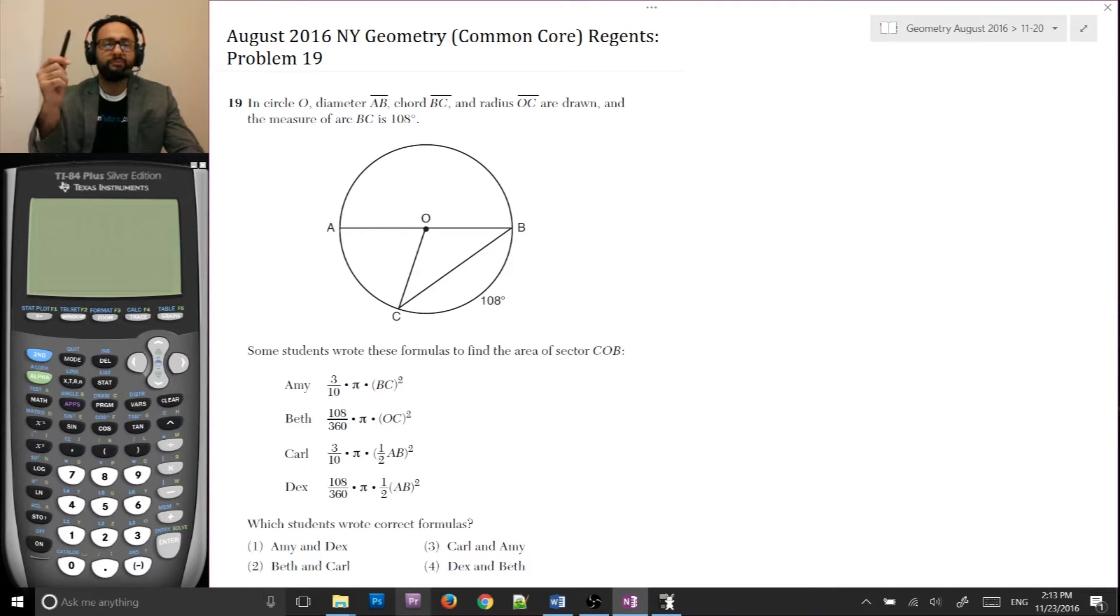So here's the problem. In circle O, diameter AB, chords BC, and radius OC are drawn, and the measure of arc BC is 108 degrees. Some students wrote these formulas to find the area of sector COB, and it says which students wrote the correct formulas, and they're in pairs. Amy, Dex, Beth, Carl.